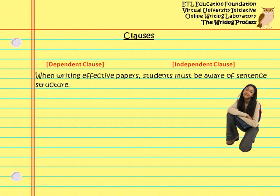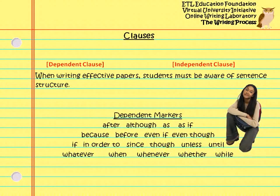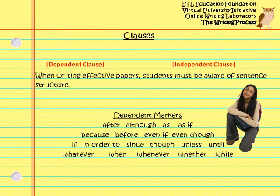Dependent clauses cannot stand alone and do not express complete thoughts. When used in sentences, they are often separated by a comma. Dependent clauses often start with words like after, although, as, as if, because, before, even if, even though, if, in order to, since, though, unless, until, whatever, when, whenever, whether, or while.